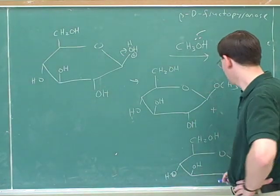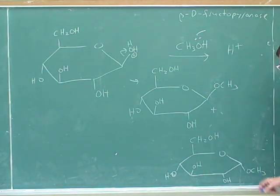And since the alcohol was attacking a trigonal planar carbocation, it's going to come in from both above and from below. So we'll get two diastereomers of each other.